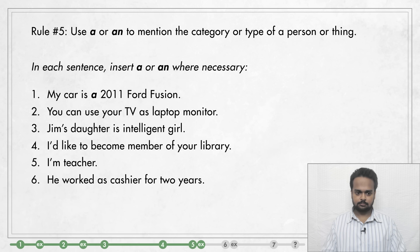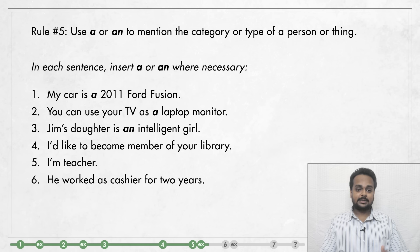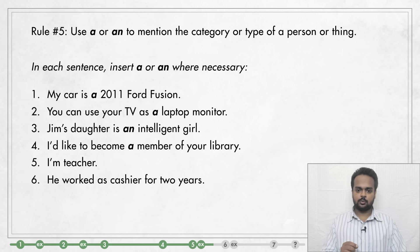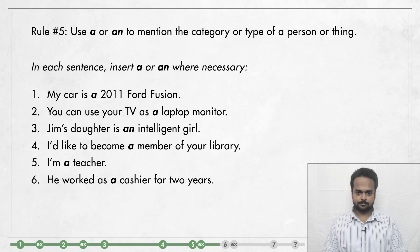Number one: My car is a 2011 Ford Fusion. Here I mention my car and then tell you the model — that is basically the type of car it is, so we use A before it. Number two: You can use your TV as a laptop monitor. The noun phrase 'laptop monitor' says what type of thing your TV can be used as. Number three: Jim's daughter is an intelligent girl — we say what type of girl she is. Number four: I'd like to become a member of your library. After the verb 'become,' I'm saying what category I want to belong to. We talk about professions the same way: I'm a teacher, not 'I'm teacher.' So to mention a type or category, use A or AN.